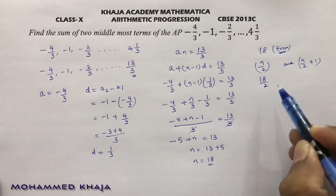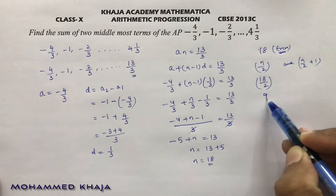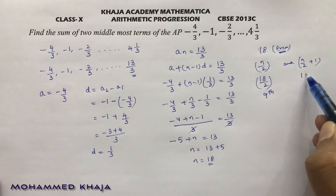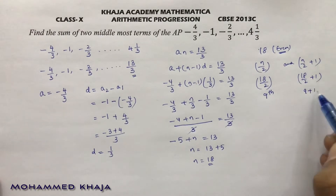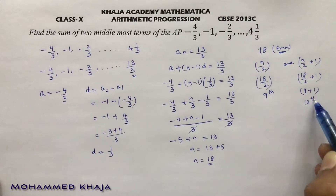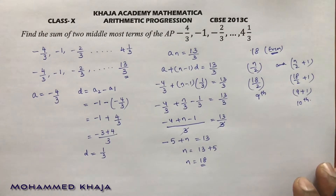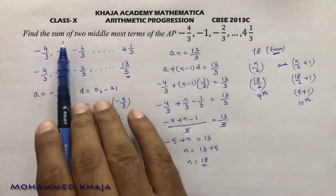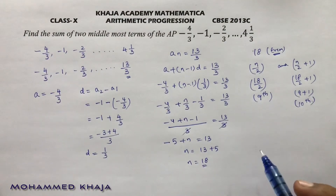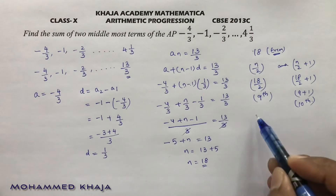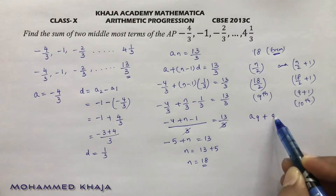Here we get 18 by 2, which is the 9th observation, and 18 by 2 plus 1, that is 9 plus 1, which is the 10th observation. The question asks us to calculate the sum of two middlemost terms, so the middlemost terms are the 9th and 10th. So we need A9 plus A10.